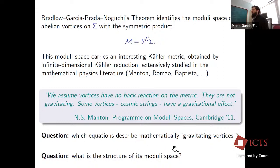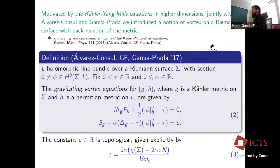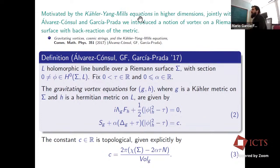The question I want to address is: which equations describe gravitating vortices mathematically? What we did was mimic the construction Garcia-Prada did, working with some equations introduced in my PhD thesis with Álvarez-Cónsul and Garcia-Prada called the Kähler–Yang–Mills equations. We do a dimensional reduction similar to the one in Garcia-Prada's theorem to obtain the gravitating vortex equations.